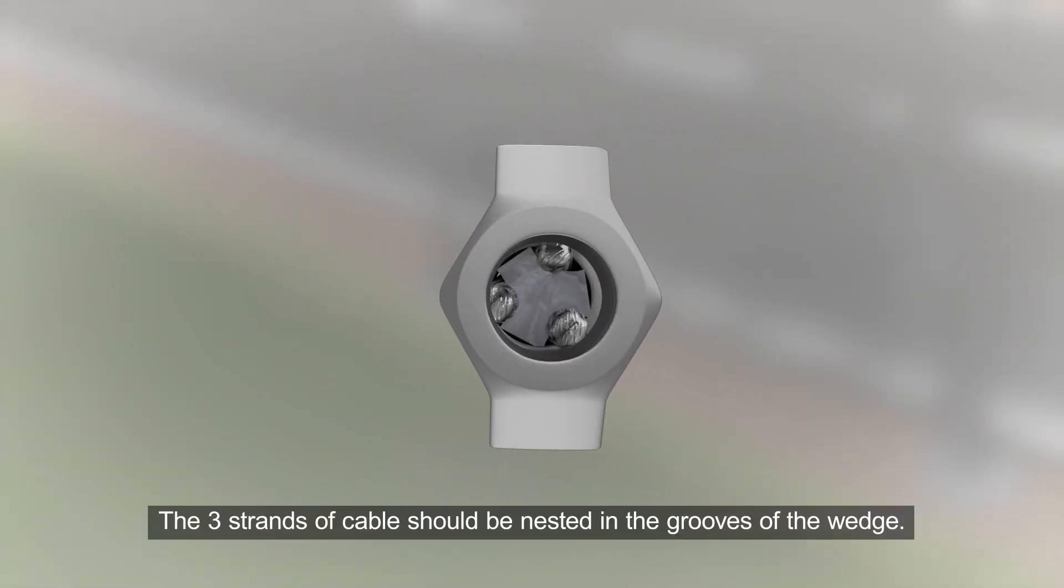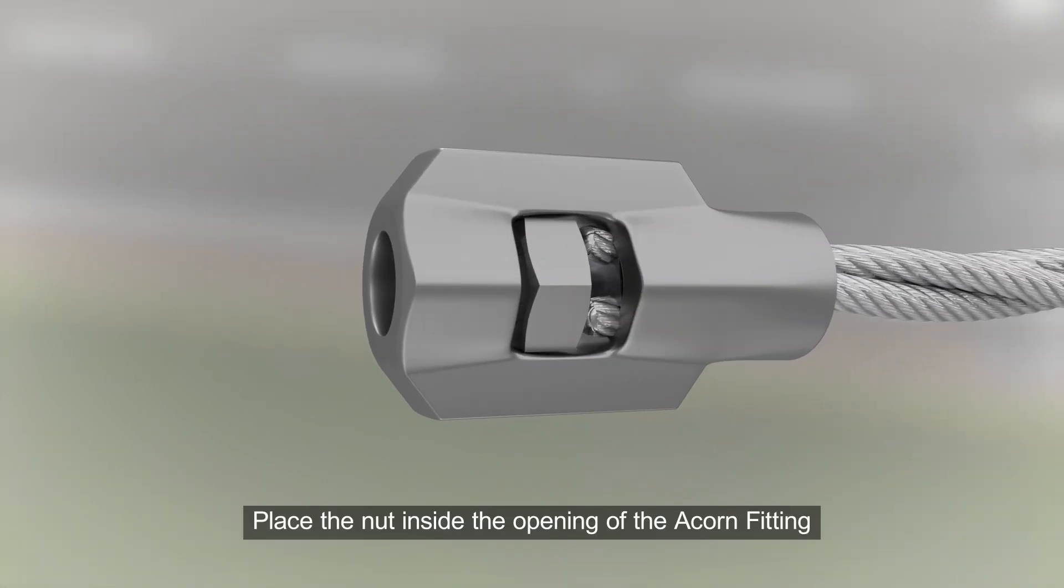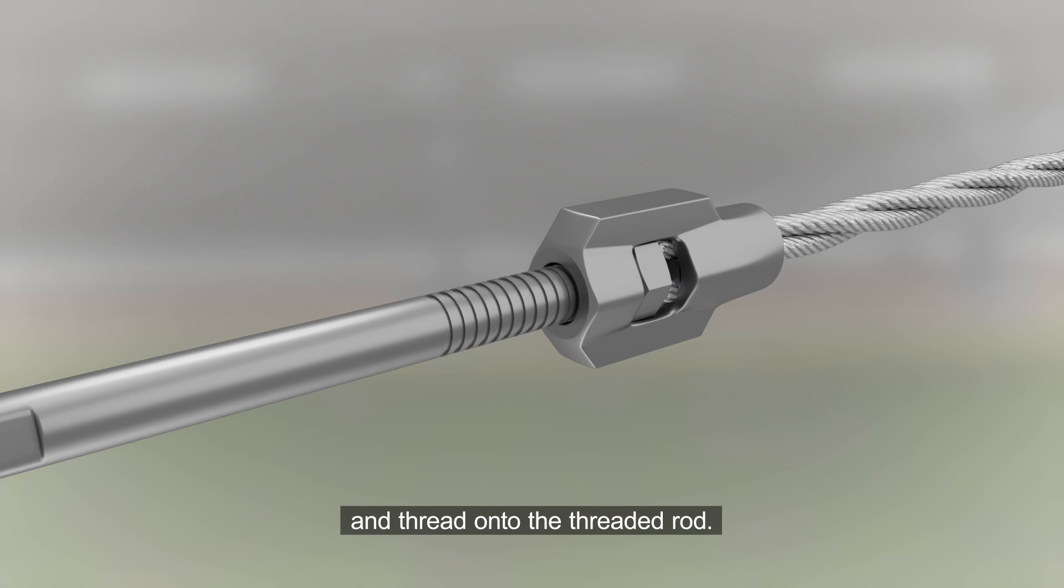The three strands of cable should be nested in the grooves of the wedge. Place the nut inside the opening of the acorn fitting and thread onto the threaded rod.